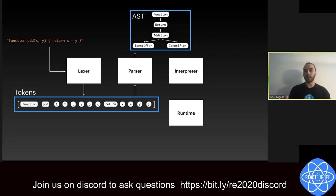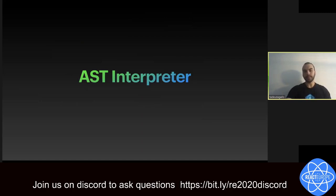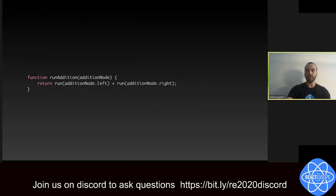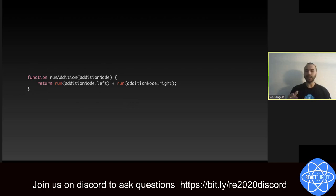Now we want to actually run our program. The simplest way of implementing it would be to take this AST and feed it straight into an interpreter — unsurprisingly called an AST interpreter. If we wanted to write this AST interpreter, the main pieces of code we'd need are just four functions: one for the function node, the return, the addition, and the identifiers. For addition, the result is just: run the left-hand side, run the right-hand side, and add them together. The run function takes any kind of node and calls the appropriate function — switching on node type to call run_function, run_identifier, run_addition, and so forth.